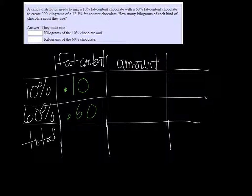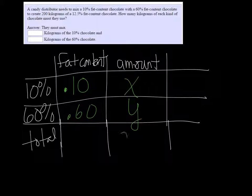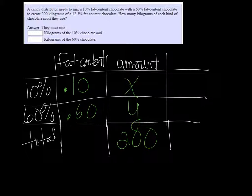Then the amount is how many kilograms of that chocolate. We don't really know either one, so we'll call one x and one y. But I know that the total amount of chocolate we should have is 200 kilograms when we're done. And then the total fat content at the end is going to be 12.5%, or 0.125.